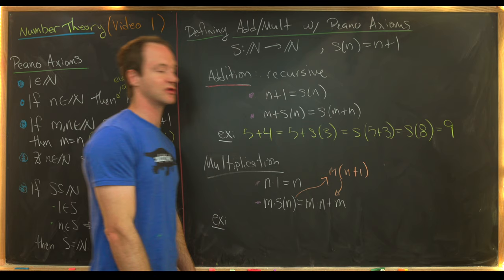We just showed that our recursive definition of addition via the successor function obeys the associative rule. Now we're going to show that that same definition implies the distributive rule of multiplication over addition. Fix natural numbers L and M and consider the set B of all natural numbers N such that L times (M plus N) equals LM plus LN — the distributive rule. Our goal is to use induction to show that B equals the natural numbers.